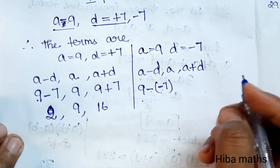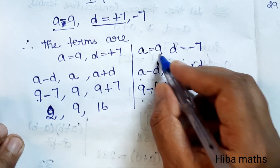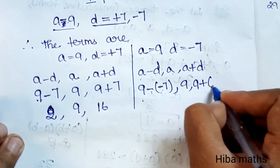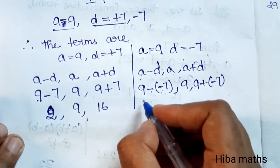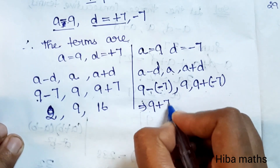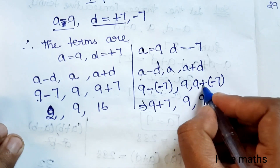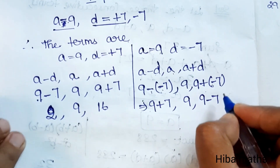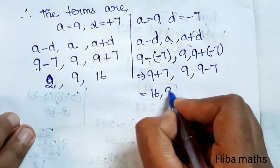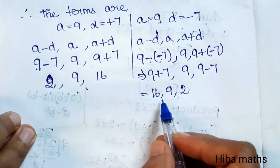With A equals 9 and D equals minus 7: A minus D equals 9 minus (-7) equals 16; A equals 9; A plus D equals 9 plus (-7) equals 2. The three terms are 2, 9, 16.